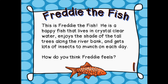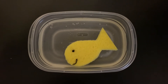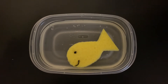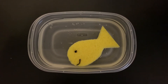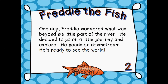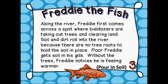How do you think Freddie feels? So this is Freddie in his little river. I took a Tupperware and filled it with water, and I cut a sponge out into the shape of a fish and gave him a little smile. This is what Freddie looks like in his home. One day Freddie wondered what was beyond his little part of the river and decided to go on a journey.